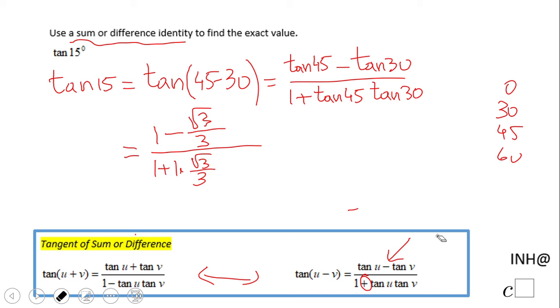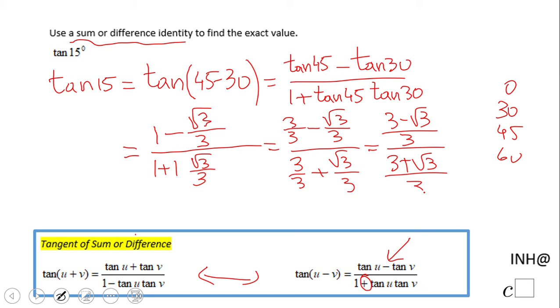Now we simplify the complex fraction. One is 3 over 3, so the numerator becomes 3 minus square root of 3, all over 3. The denominator is 3 plus square root of 3, all over 3. We end up with (3 - √3)/3 divided by (3 + √3)/3.